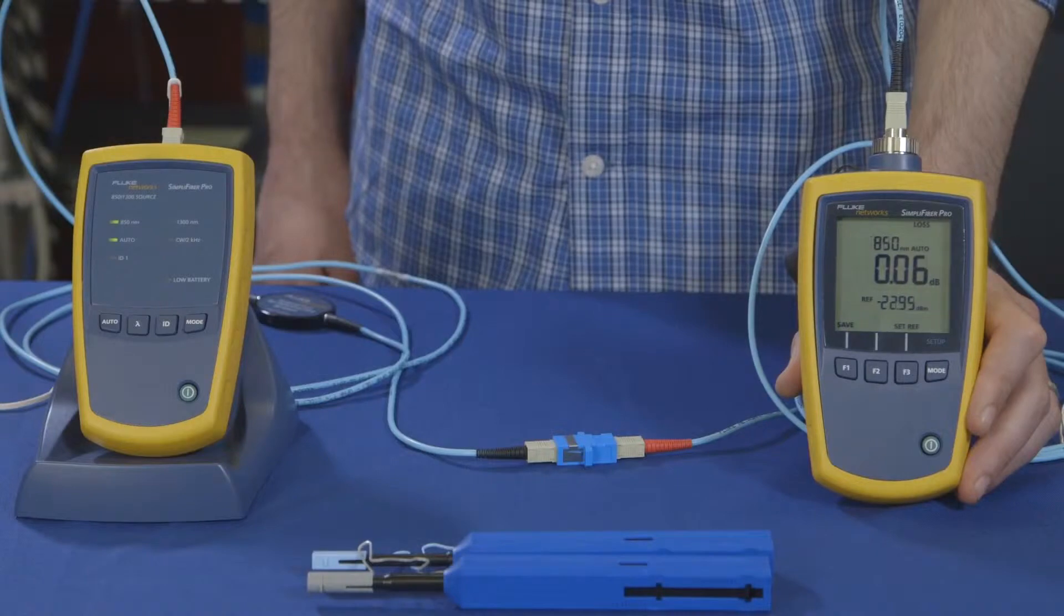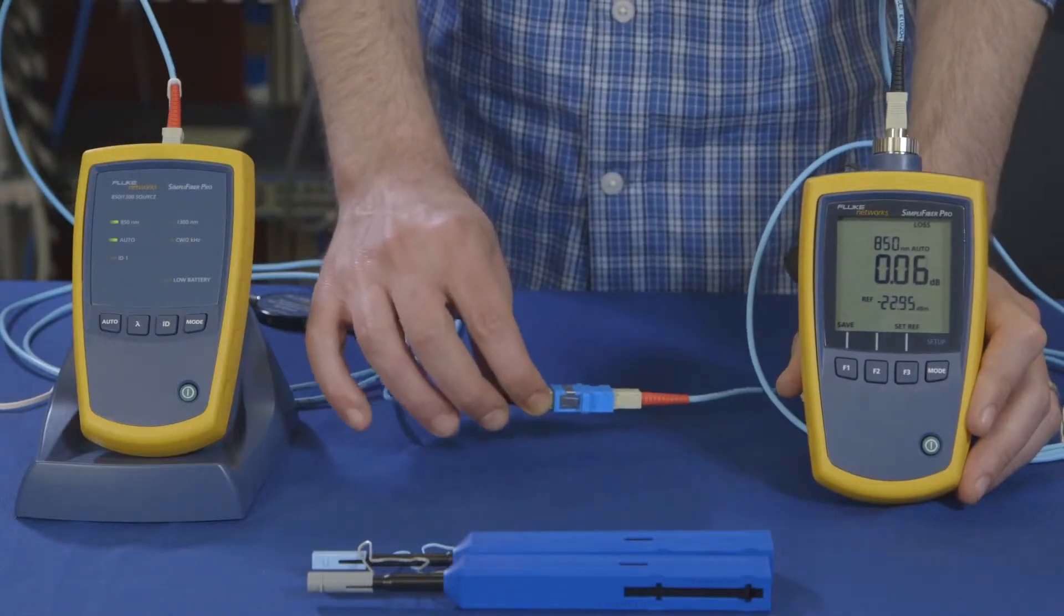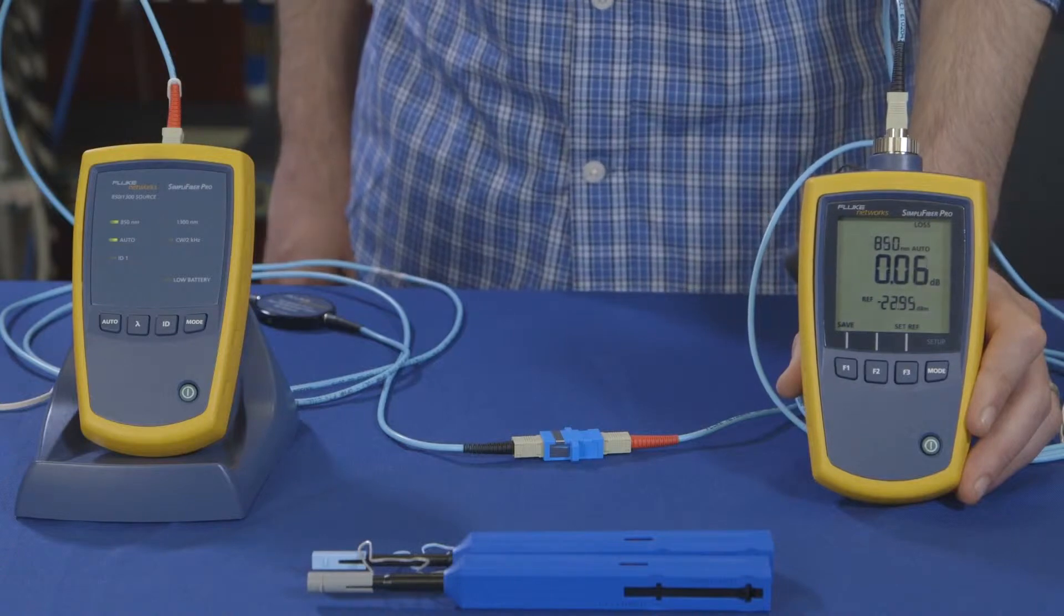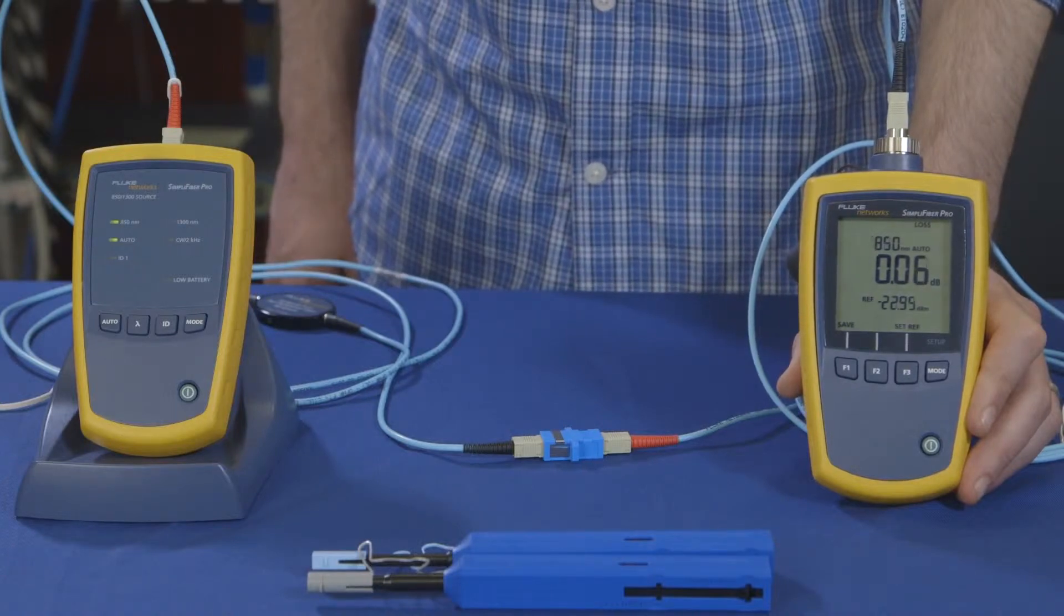Using a coupler, we've attached the second TRC, and we'll run a test to verify they're good. We should not get a loss greater than 0.15 dB.